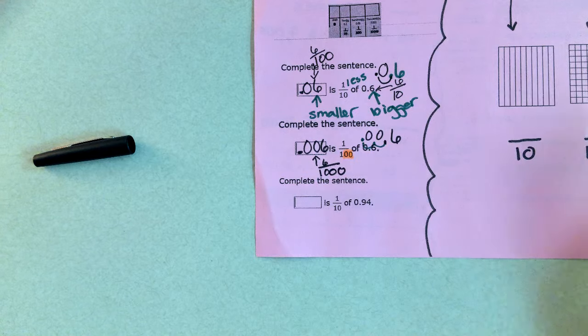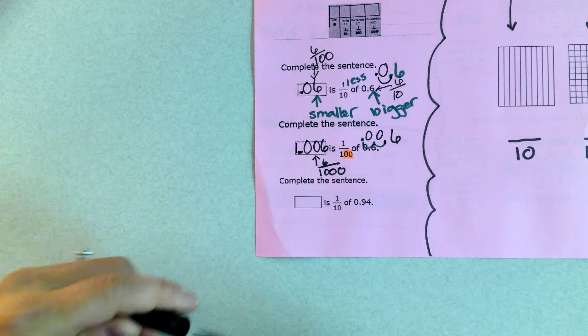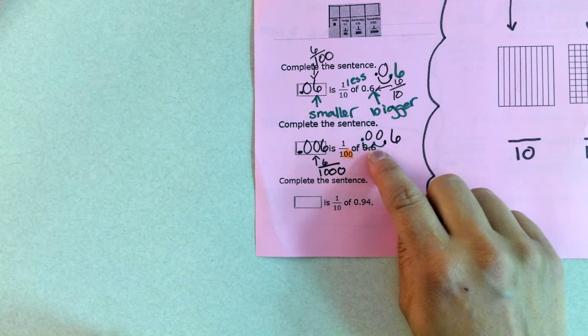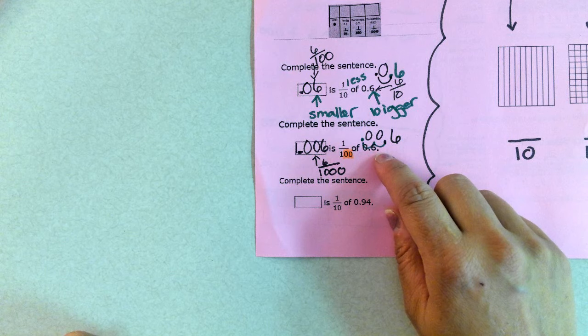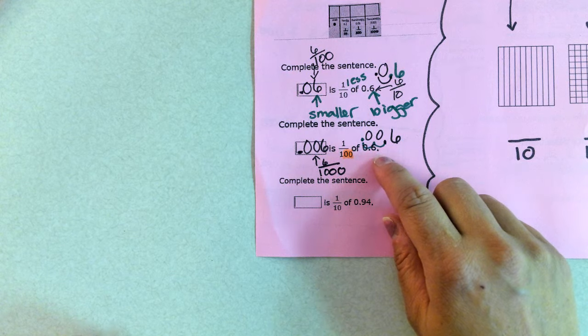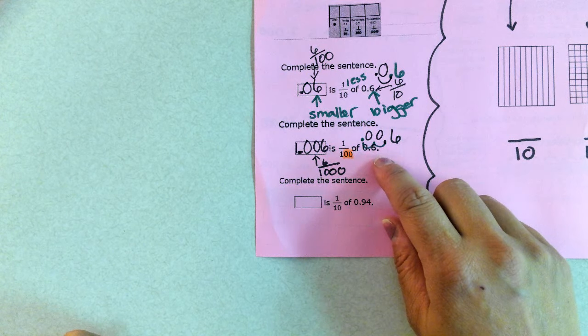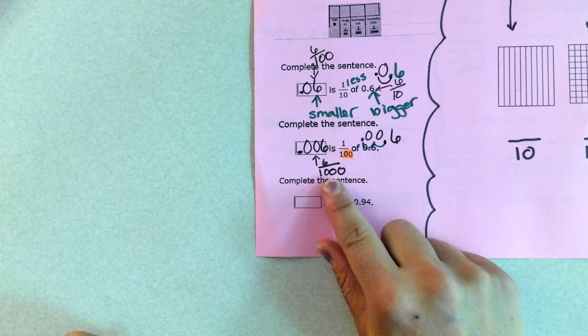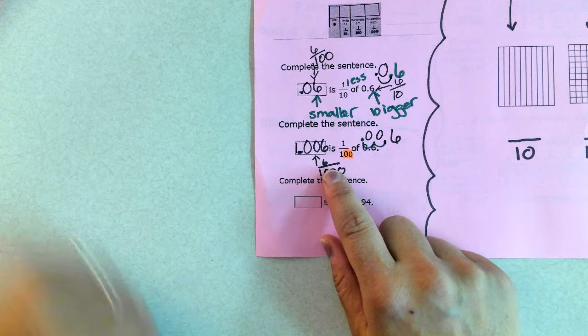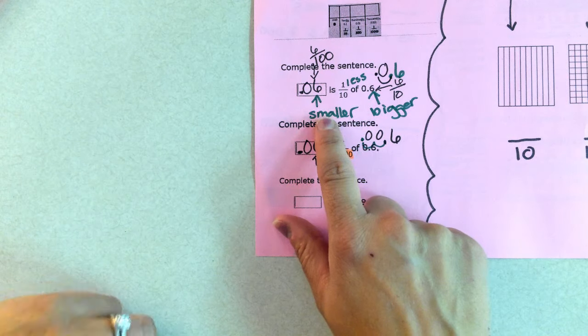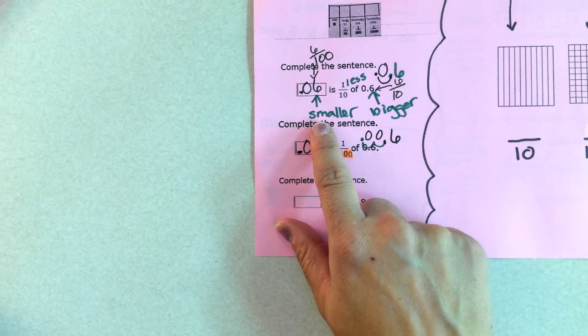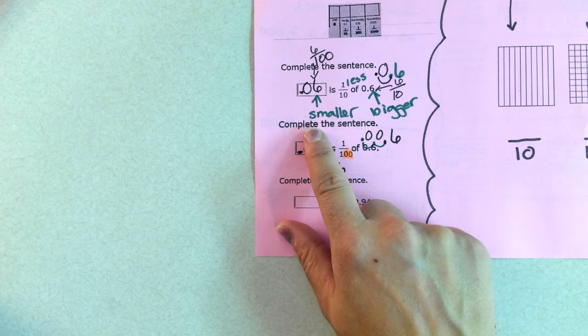So that is your review. Use your notes to help you and guide you. Feel free to go over to the counter and grab scrap paper. Again, constantly asking yourself, am I looking for a number that is smaller or bigger? And if it helps you to write it out, do not rush. Process. Think about it.